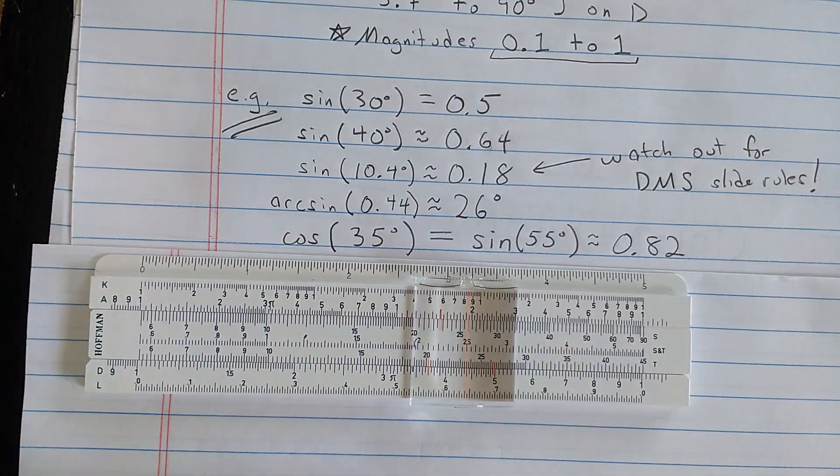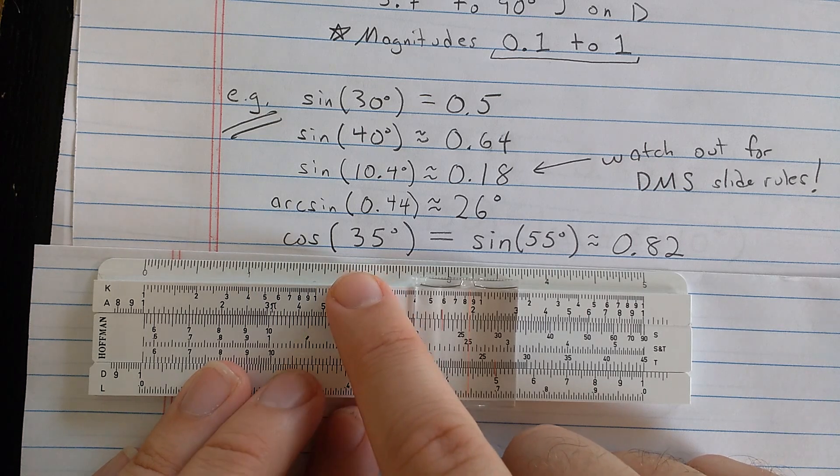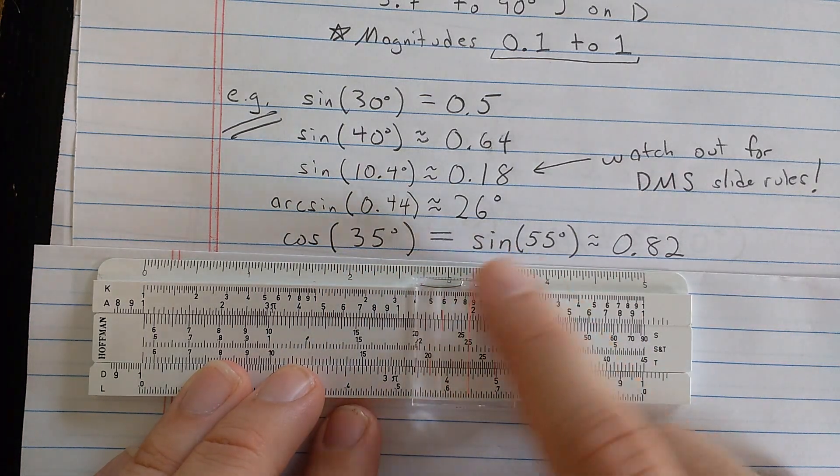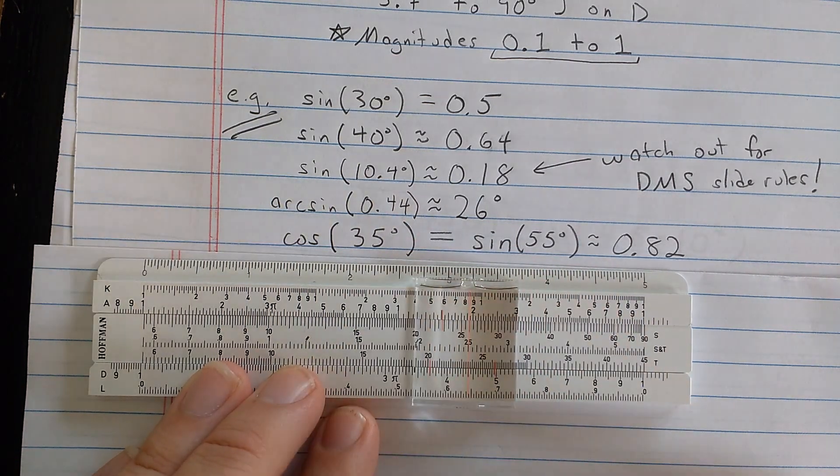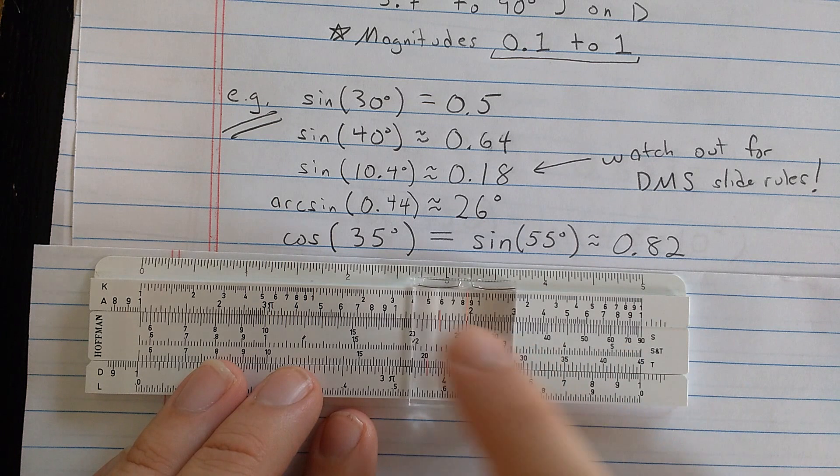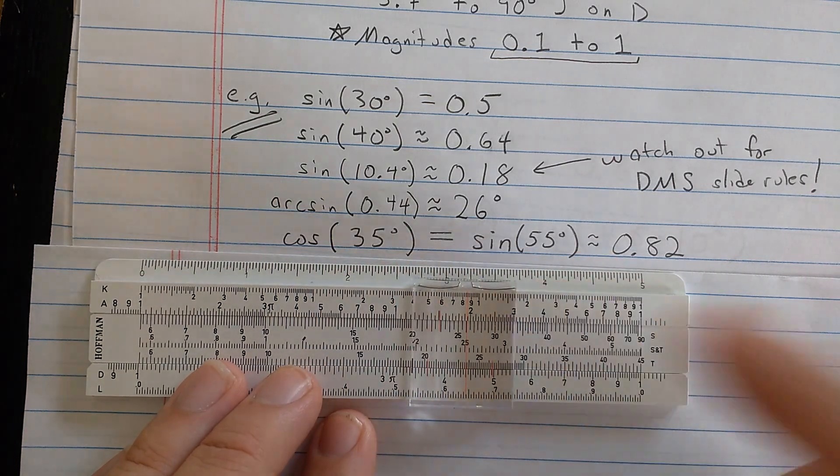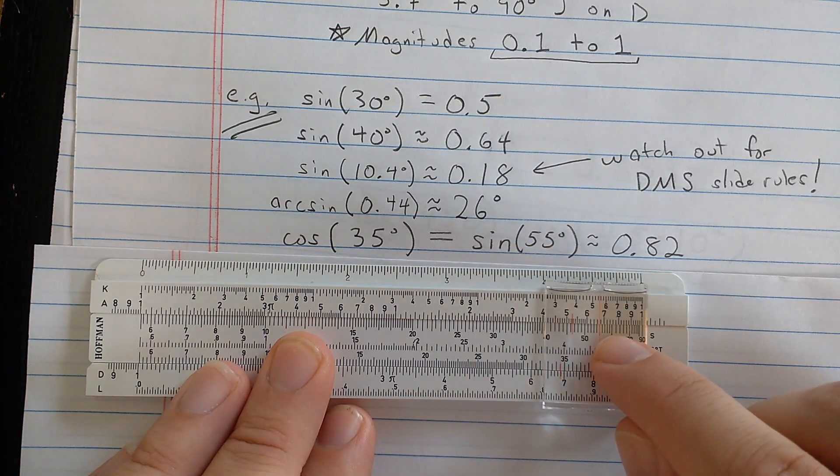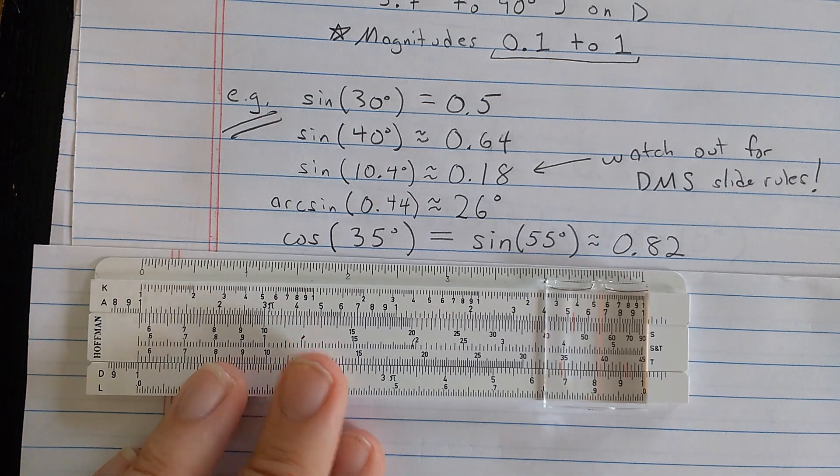Then you might be wondering, how do I compute cosine? So the trick for that is that cosine of 35 degrees is sine of the complement, complement being 90 degrees minus 35 degrees, or 55 degrees. That's, in fact, why it's called cosine. But, so to compute cosine of 35 degrees, I compute sine of 55 degrees. 55 degrees here. And I get about 0.82.